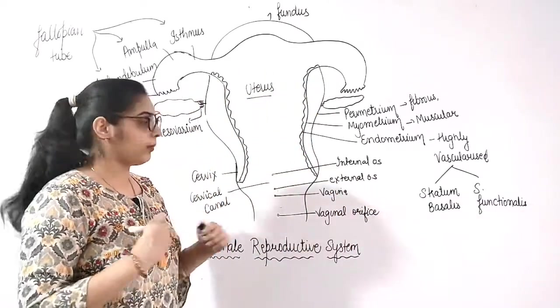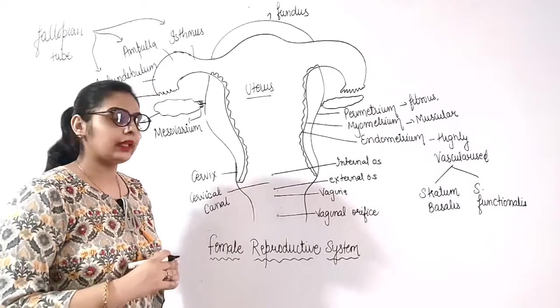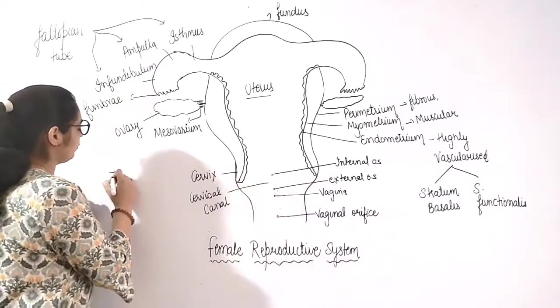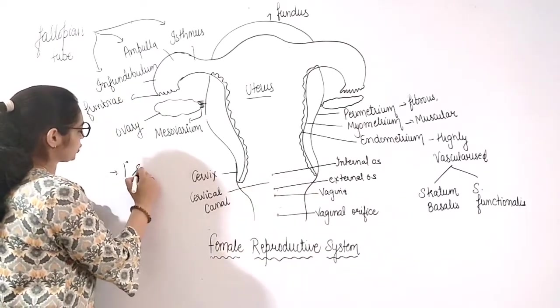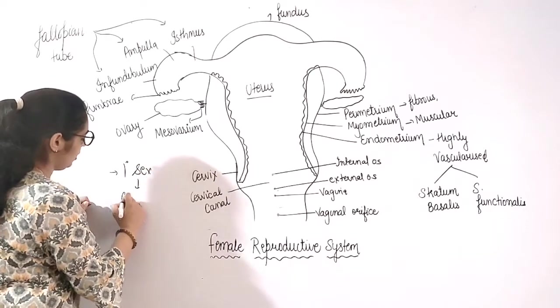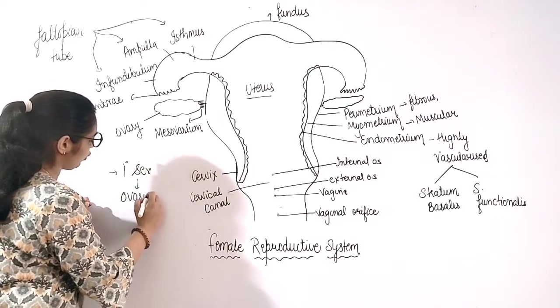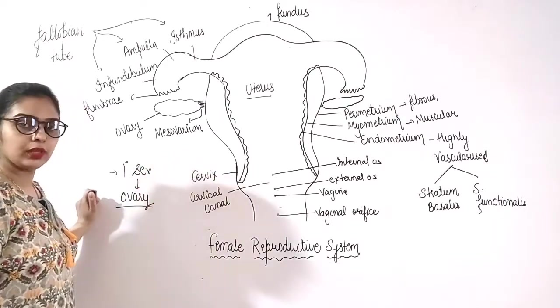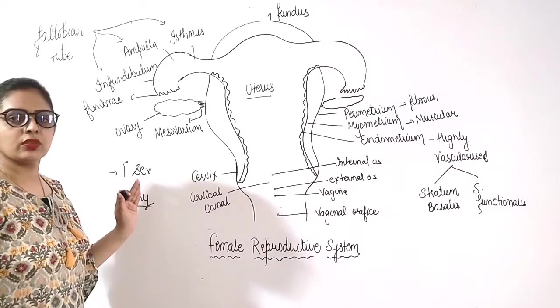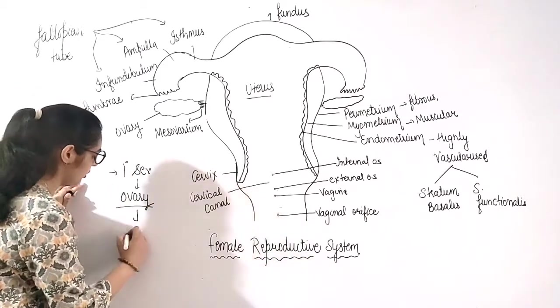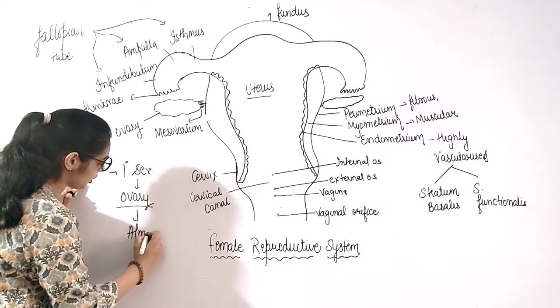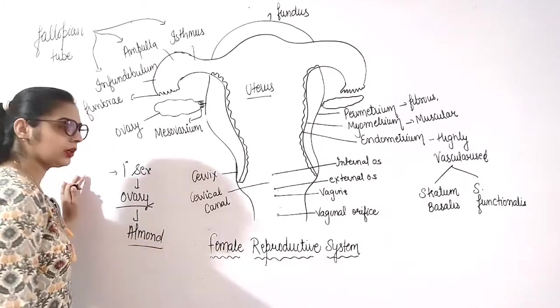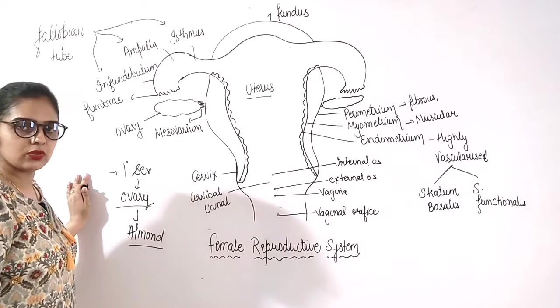So, first of all, if we are talking about the primary sexual organ, then it is ovary. Female's primary sexual organ is ovary. A pair of ovary is present in the female. Two ovaries are present and the ovary is almond shaped structure and is present in the pelvic region.